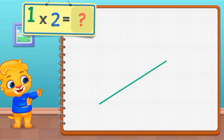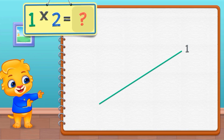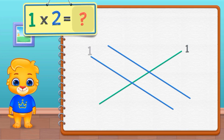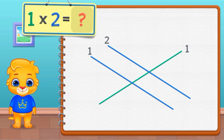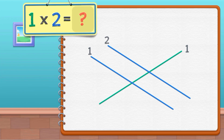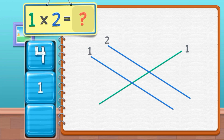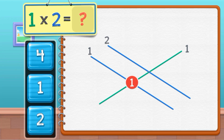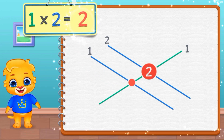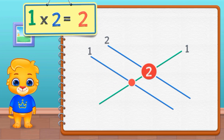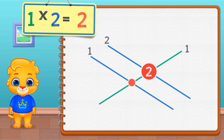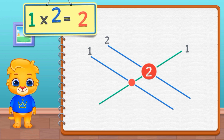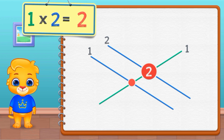1 times 2 equals 1, 2. 1 times 2 equals 2.